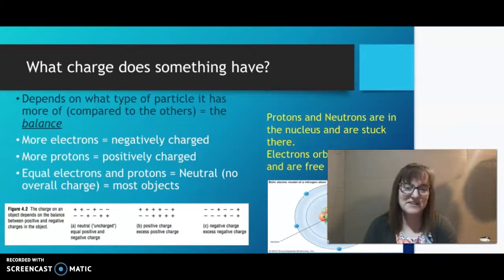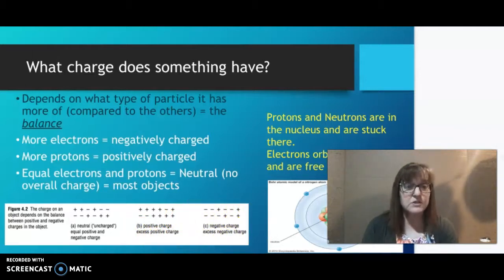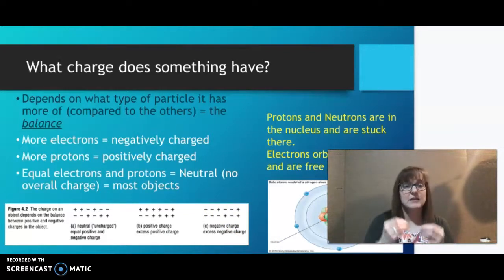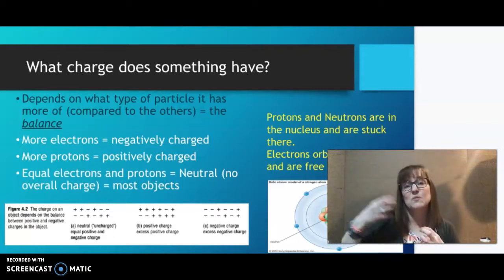So if you look down here in this section, you've got neutral because you have the exact same number of positives as negatives. This one is positively charged because you have more positives than negatives. And over here, we're negatively charged because we have more negatives than positives. Protons and neutrons stuck in the nucleus. The electrons are allowed to move and orbit outside that nucleus, which is why they are allowed to be pulled off and used.